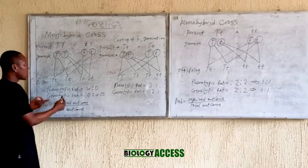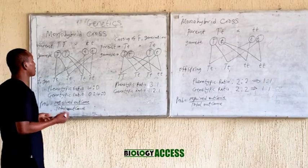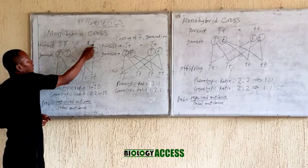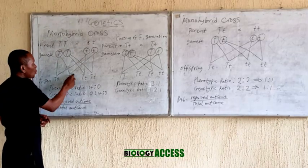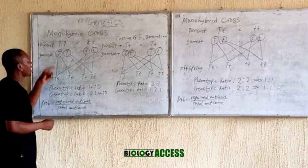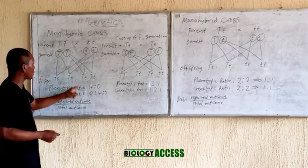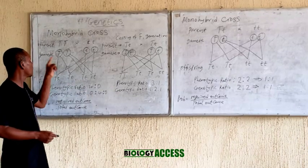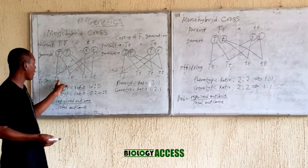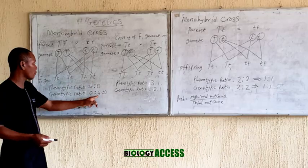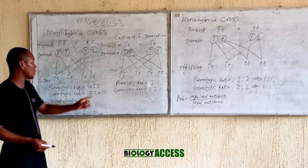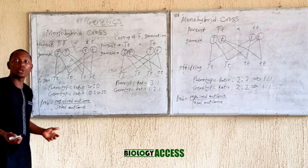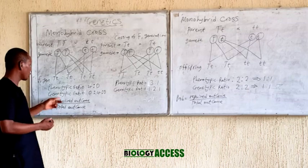Now for the genotypic ratio, we could have two possible genotypes in this case. Each individual here has the same genotype — capital T small t. So if we count the distinct genotypes: we have 0 of the first type, 4 of the heterozygous type, and 0 of the last. This is the genotypic ratio for the F1 generation.